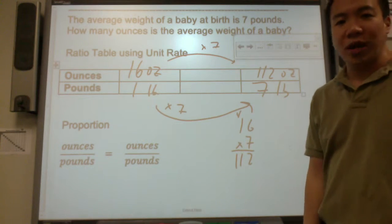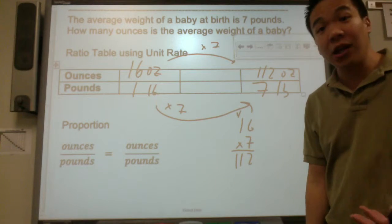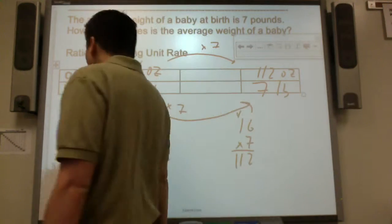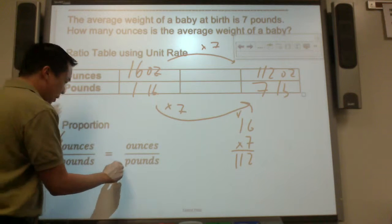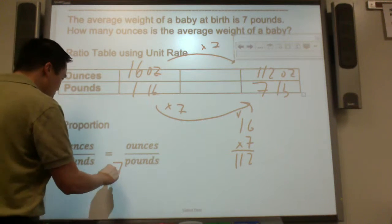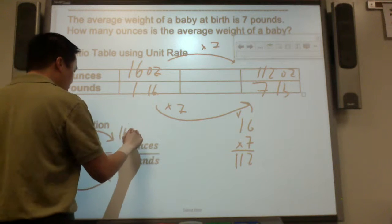Some of you may not like using ratio tables. I do, I love it. But some of you may want to write a proportion. There are 16 ounces to 1 pound, question mark ounces to 7 pounds. How do you build up from 1 pound to 7 pounds? Times 7, so 112.